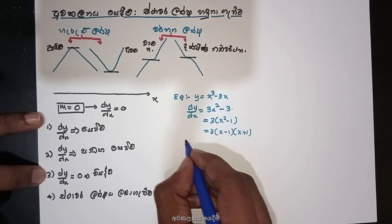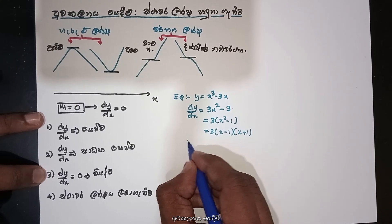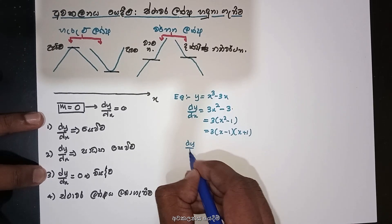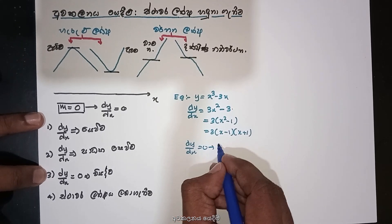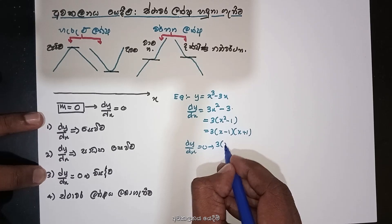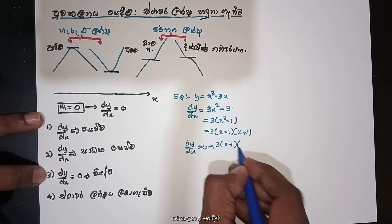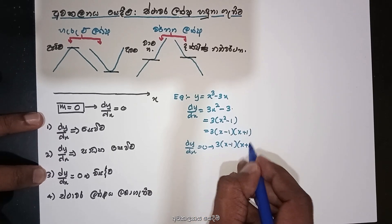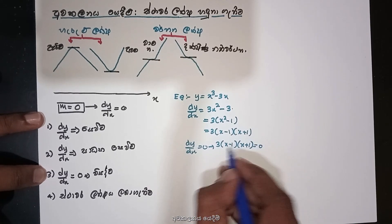Therefore we will write the do y on the X. Like we write for x parab first.